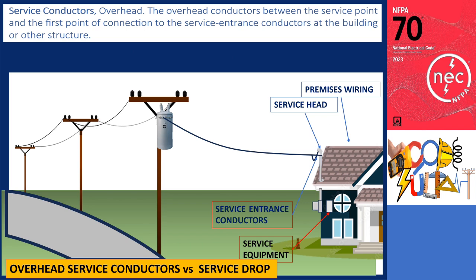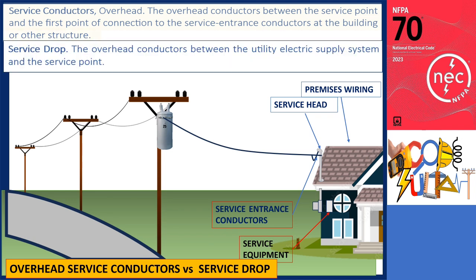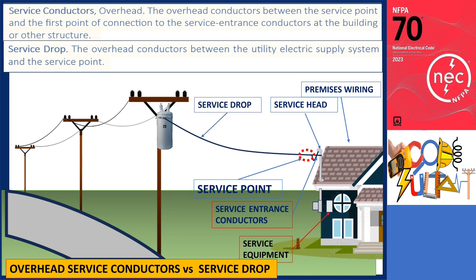Overhead service conductors refer to the conductors running between the service point and the initial connection point with the service entrance conductors at a building or structure. On the other hand, a service drop is defined as the overhead conductor that connects the utility electric supply system to the service point. In the provided illustration of an overhead installation, if the service point is located near the service entrance, these conductors are referred to as service drop.